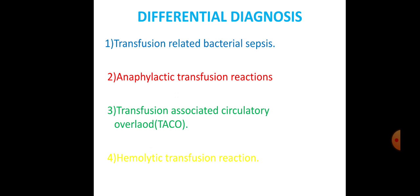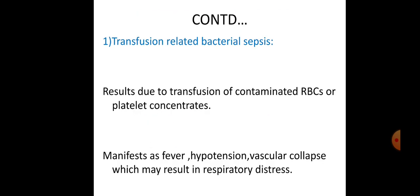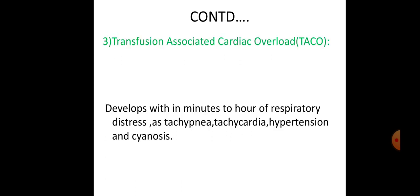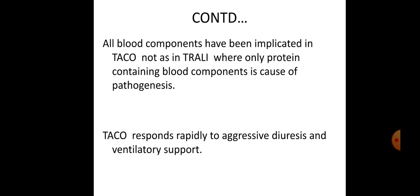The differential diagnosis includes transfusion-related bacterial sepsis, anaphylactic transfusion reactions, transfusion-associated cardiac overload (TACO), and hemolytic transfusion reactions. Bacterial sepsis results from transfusion of contaminated RBC concentrates, manifesting as fever, hypotension, and vascular collapse with possible respiratory distress. Anaphylactic reactions cause respiratory distress from bronchospasm — tachypnea, wheezing, cyanosis, severe hypotension — with laryngeal and bronchial edema rather than pulmonary edema as in TRALI. TACO develops within minutes to hours with tachypnea, tachycardia, hypertension, and cyanosis; all blood components are implicated in TACO, whereas only plasma-containing components cause TRALI. TACO responds rapidly to aggressive diuresis and ventilatory support.